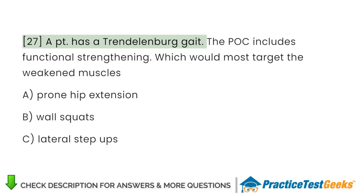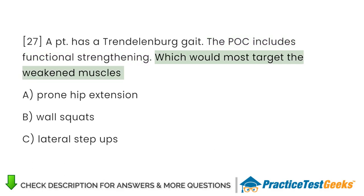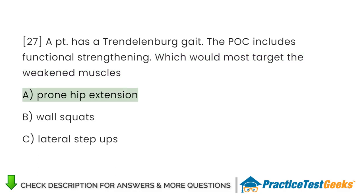A patient has a Trendelenburg gait. The plan of care includes functional strengthening. Which exercise would most target the weakened muscles? A. Prone hip extension. B. Wall squats. C. Lateral step-ups.